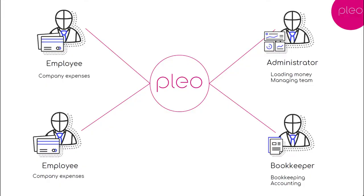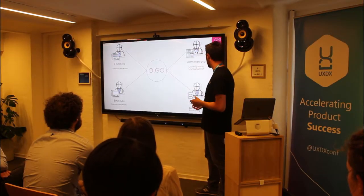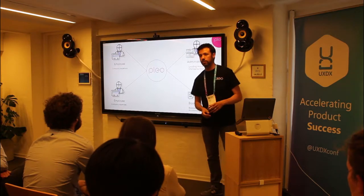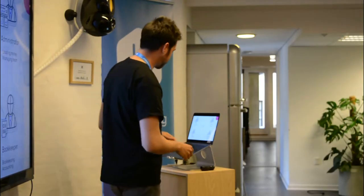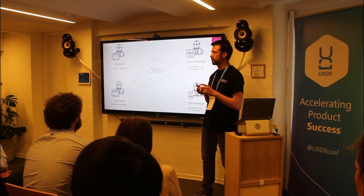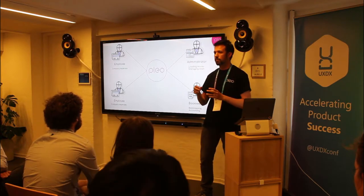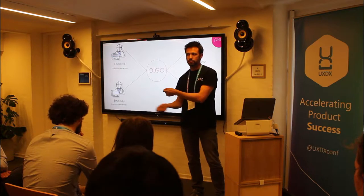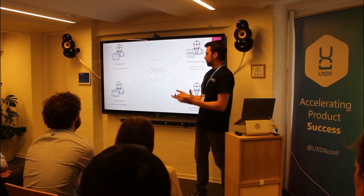So we have four different users. We have the admin, which is the responsible person of the company — usually the CFO or CEO — who is loading money into PLAYO and managing the team. Then we have the employees, who are spending the money that the admin loads into PLAYO. And then the bookkeeper, who is responsible for making sure everybody uses the money correctly. That's what PLAYO is, and it has to manage money, expense processing, and a lot of different things.